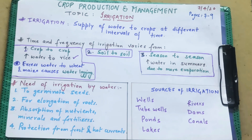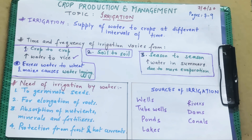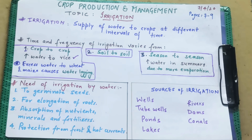Absorption of minerals, nutrients, and fertilizers — हमने fertilizers में पढ़ा था कि fertilizers are very soluble in water। तो जब तक पानी में चीज़ें मिलेंगी नहीं, तब तक वो plant की body में नहीं जा पाएंगी। इसके लिए पानी बहुत ज़रूरी है, क्योंकि पानी हर चीज़ को अपने अंदर मिला लेता है।